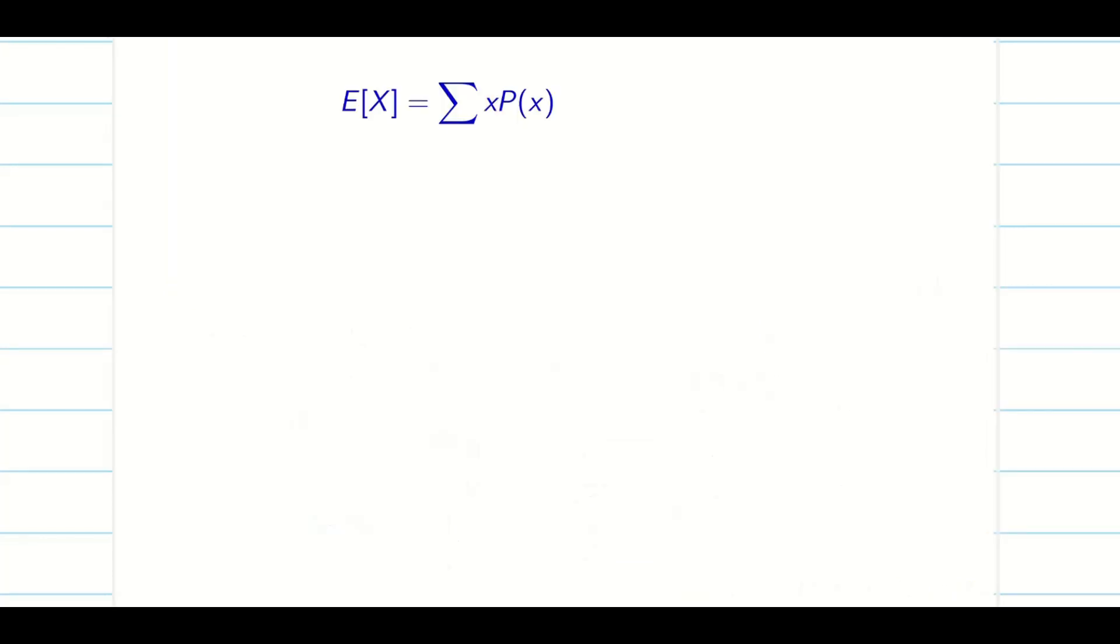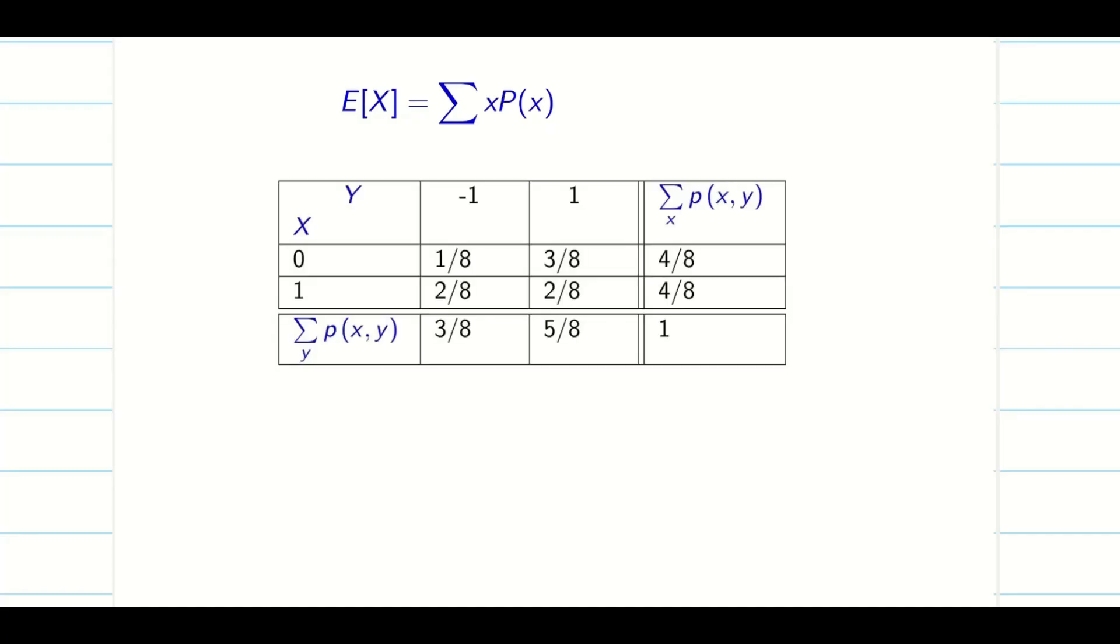First, we have to find E of X. If your table is correct, the answer is going to be 100% correct. Take the table. E of X is X into the corresponding probabilities. Here, 0 and then the corresponding probability is 4 by 8.